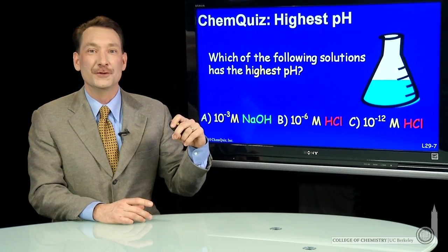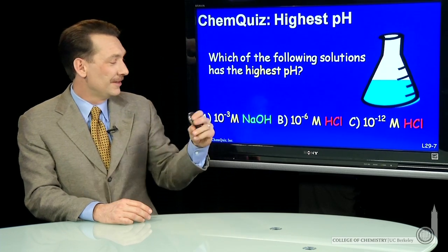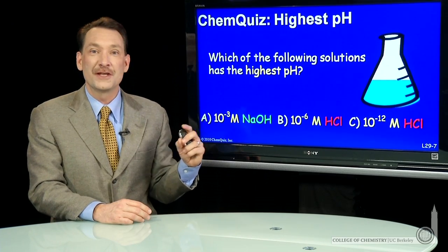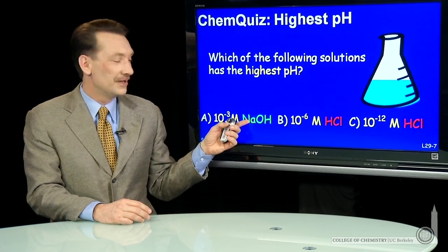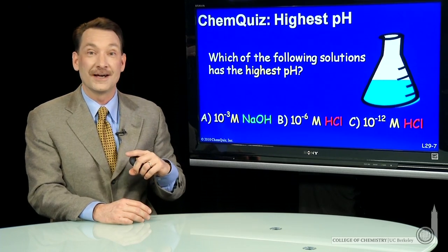Let's look at the pH of a few solutions and try to predict which has the highest pH. So I'll have 10 to the minus 3 molar NaOH that totally dissociates into Na ions and OH minus ions.